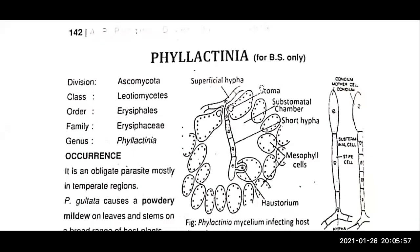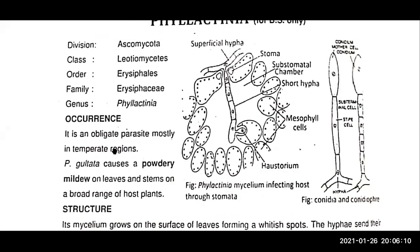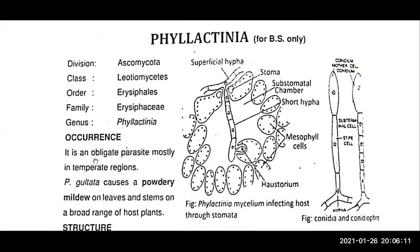Phylactinia. Its classification: it belongs to Ascomycota, division class Leidiomyces, and the genus Phylactinia. It is an obligate parasite mostly found in temperate regions.